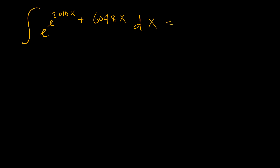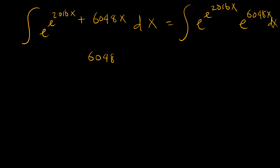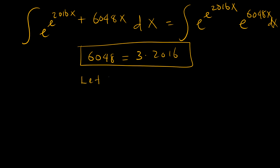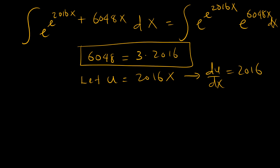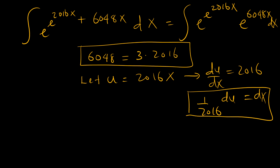Using the rules of exponents, we can say this is e to the power e to the power 2016x, and then another e to the power 6048x dx. It's easy to see that 6048 is equal to 3 times 2016. So I could use this: let u be equal to 2016x, such that du/dx is equal to 2016, and 1 over 2016 du can be substituted for dx.